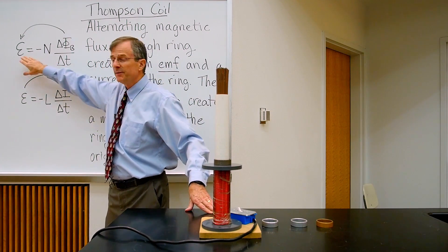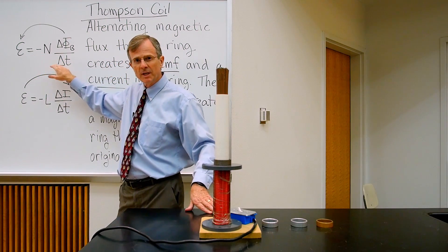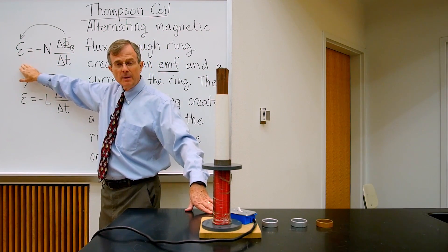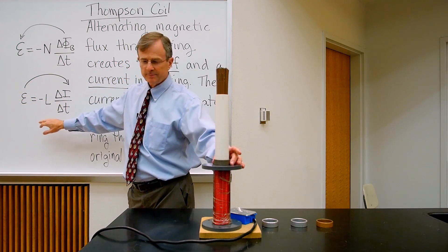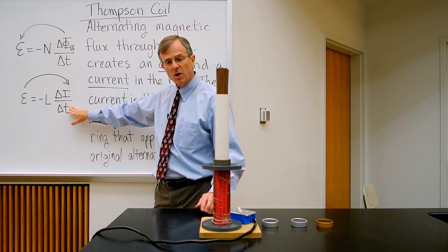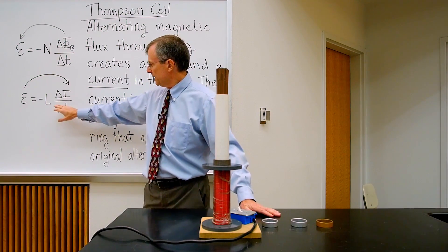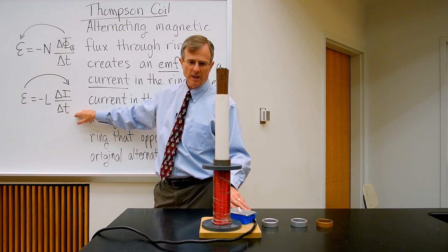There's a 90 degree phase lag between the change in flux and the EMF in the ring. Then that EMF in this ring will generate a current in the ring. There's a 90 degree phase lag between these two as well.